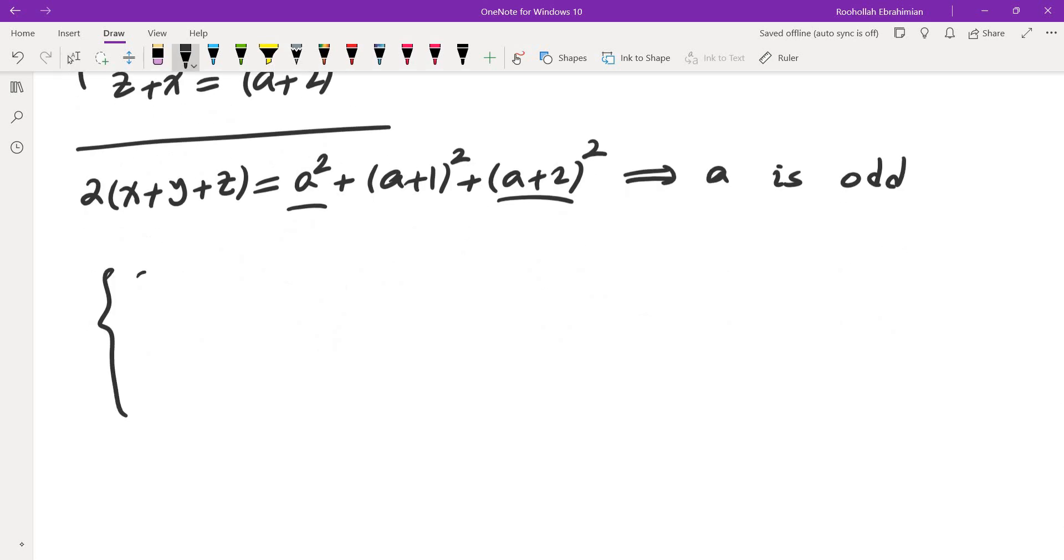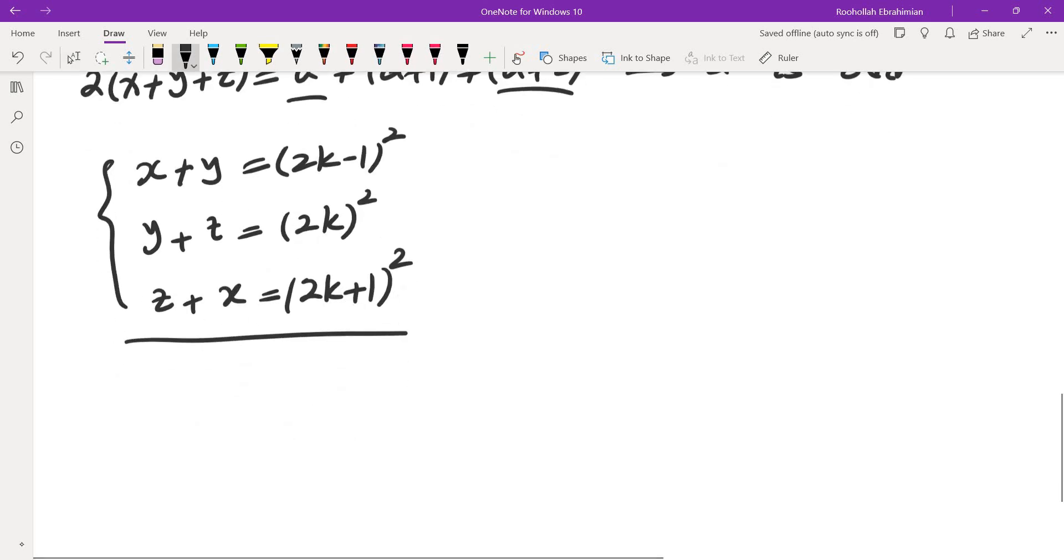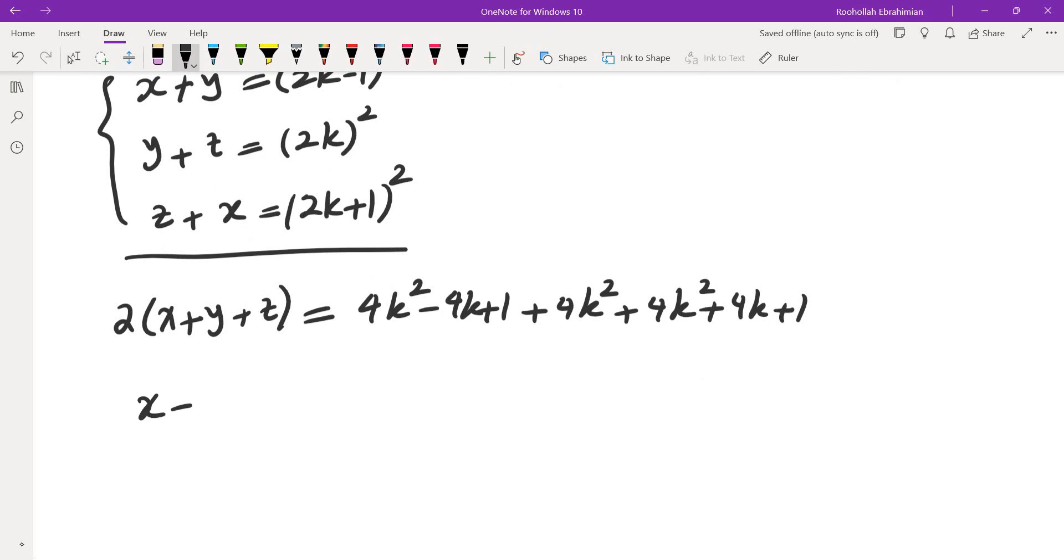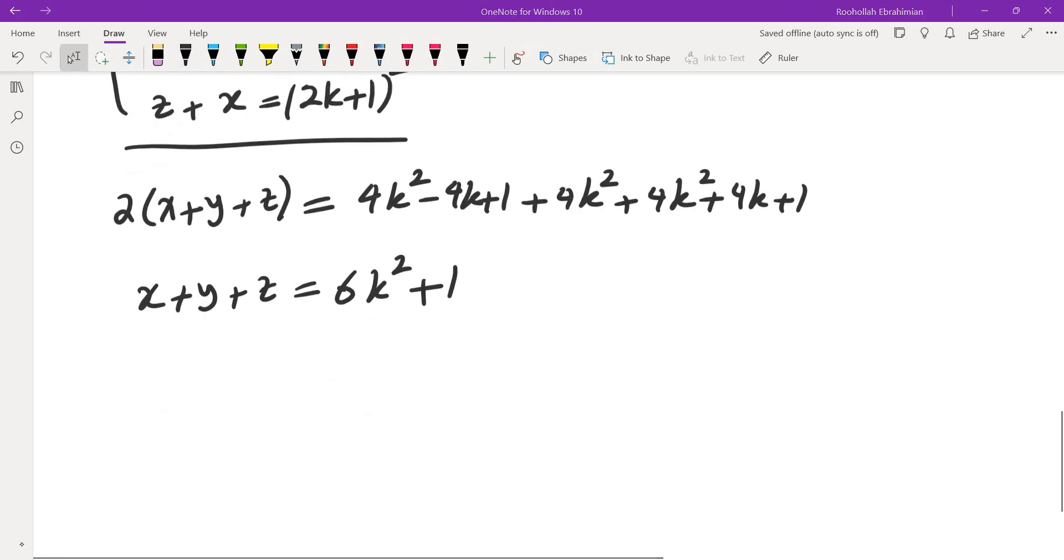So that means a is odd. So for simplicity, let me rewrite the equation and write it down as x plus y equals 2k minus 1 squared, y plus z equals 2k squared, and z plus x equals 2k plus 1 squared. If you add these up, you would get 2 times x plus y plus z equals, so the sum of these would be 4k squared minus 4k plus 1 plus 4k squared plus 4k plus 1. Dividing by 2, we get x plus y plus z equals 6k squared, the 4k's cancel, and we get plus 1.